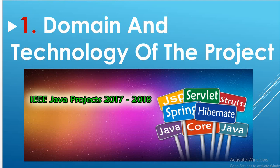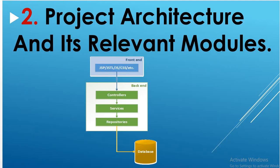After explaining your domain and technology, you need to discuss the architecture and its relevant modules. For the project architecture, explain its layers: in the front-end, mention which technology you are using — like Angular.js, JSP, JSTL, Node.js, CSS, or HTML. In the back-end, we are using three layers in an MVC model: the controller layer, the service layer, and the repository layer for saving objects to the database.